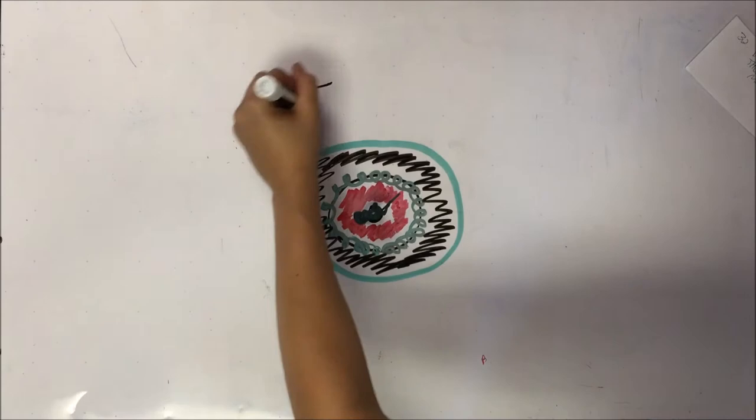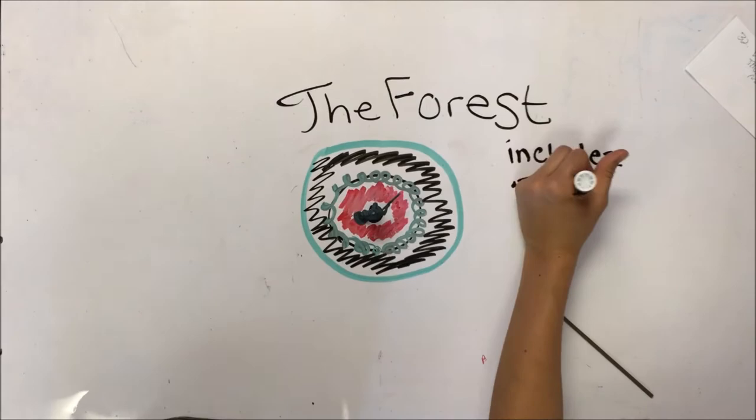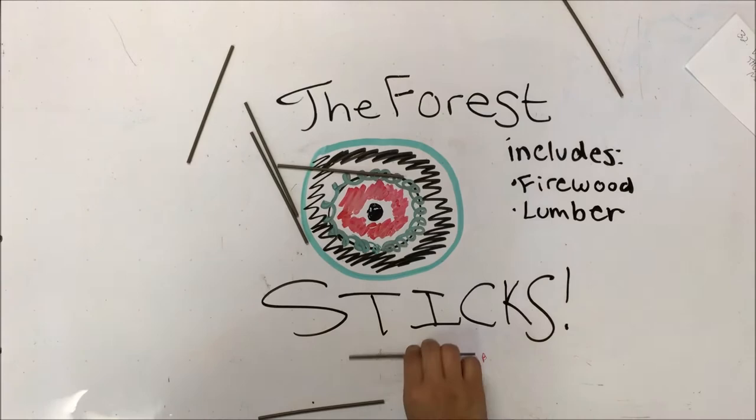The next ring in the von Thunen model is the forest. In the forest there are a lot of trees. With these trees, people make lumber, building material, and wood. Also, not many people live in this ring.